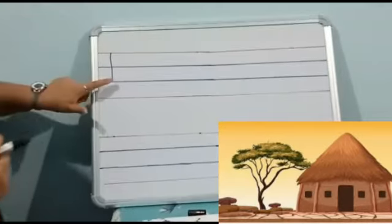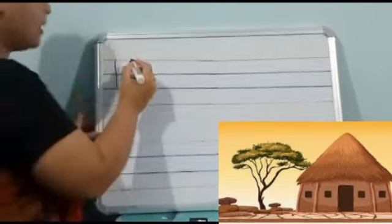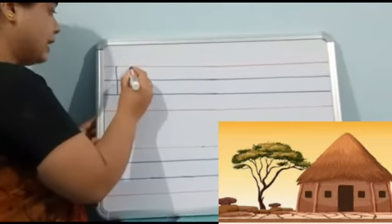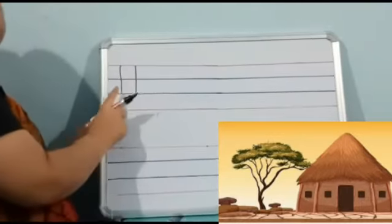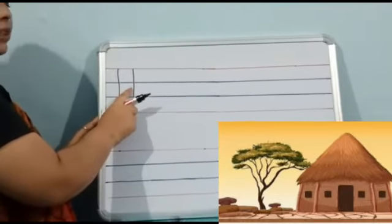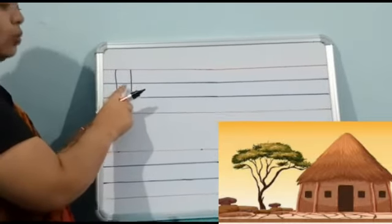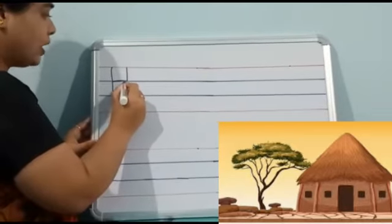Standing line, second blue line takh banayenge, uske neche galat ho jayega. Then make one more standing line. Doh standing lines banayenge and join both the standing lines with the sleeping line. Donuh standing lines ko sleeping line ke saath join kar denge.